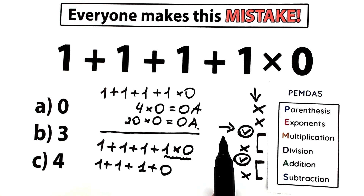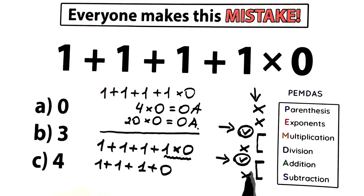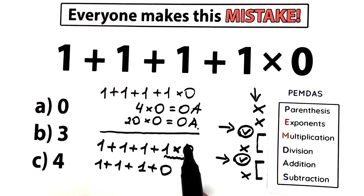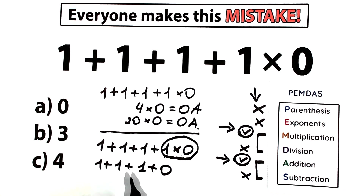Multiplication and division come before addition and subtraction. Multiplication first — only this expression, 1 times 0 — and now 1 plus 1 plus 1 equals 3.